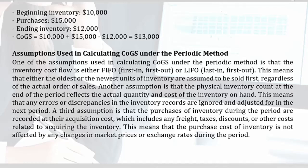Another assumption is that the physical inventory count at the end of the period reflects the actual quantity and cost of the inventory on hand. This means that any errors or discrepancies in the inventory records are ignored and adjusted for in the next period.